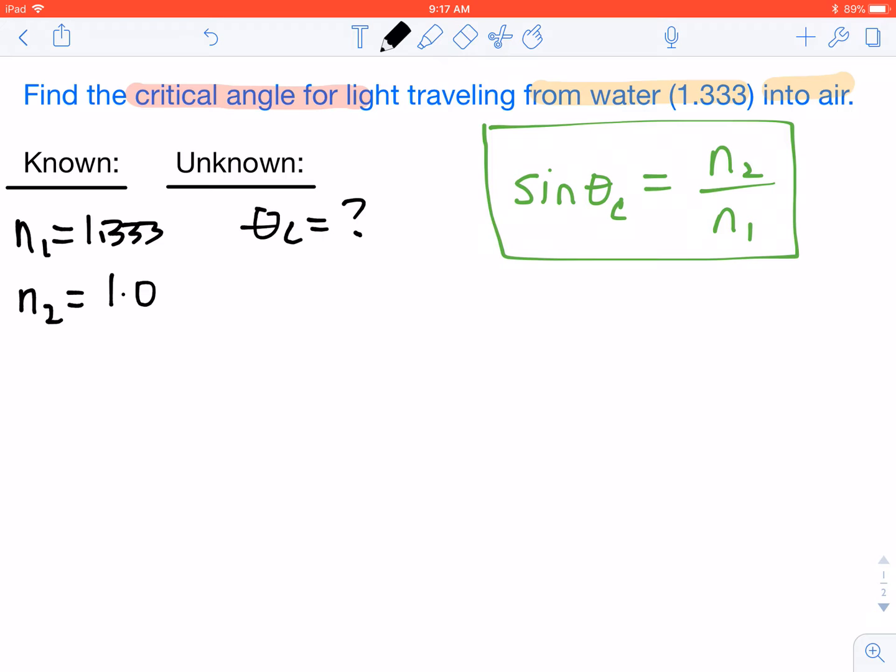At this point, we just have to plug in our values. We don't know theta C, so sine of theta C is going to equal 1.0 divided by 1.333. We're going to go ahead and do that calculation. Sine of theta C equals 0.75.